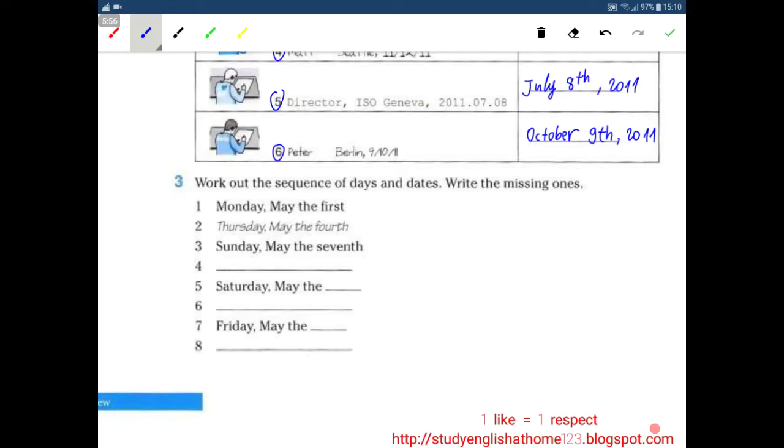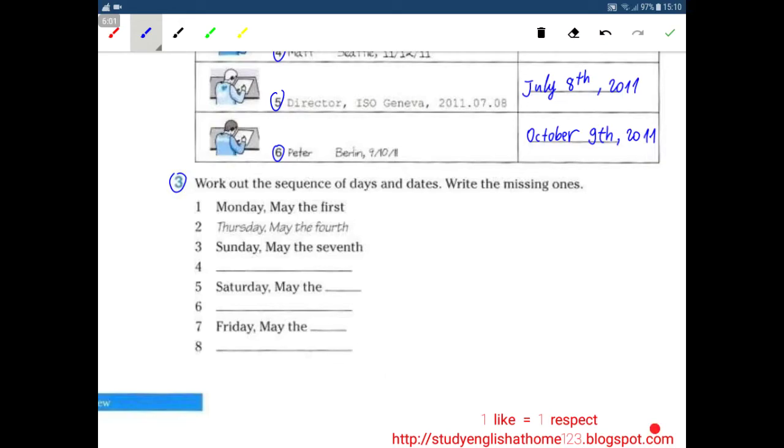Next number 3. Work out the sequence of days and dates, write the missing ones. Number 1 Monday May the 1st, number 2 Thursday May the 4th, number 3 Sunday May the 7th. So we have here the 1st, we plus 3 days. Here we also plus 3 days here.